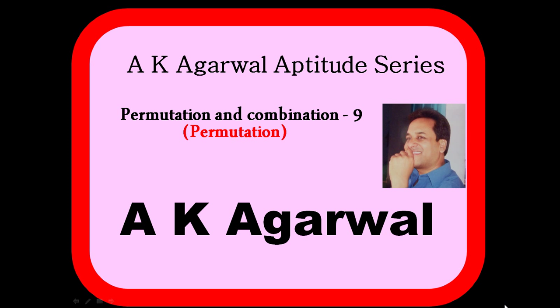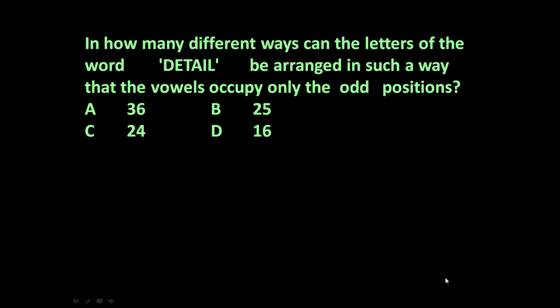Hello friends and welcome to AK Agrawal Aptitude Series. In this session we are going to learn a technique for solving a problem of permutation and combination. The given problem is: in how many different ways can the letters of the word DETAIL be arranged in such a way that the vowels occupy only the odd positions?